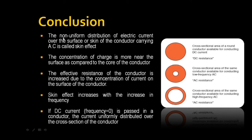In conclusion, the non-uniform distribution of electric current over the surface or skin of the conductor carrying AC is called skin effect. The concentration of charge is more near the surface compared to the core. The effective resistance of the conductor is increased due to the concentration of current on the surface. Skin effect increases with increase in frequency. In DC, the frequency value is zero, so the current is uniformly distributed over the cross section of the conductor. For AC, the frequency value is higher, which is why the skin effect occurs.